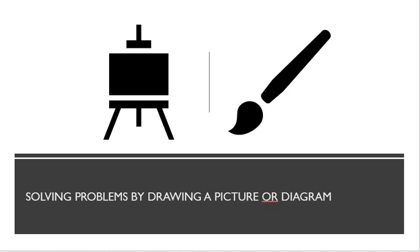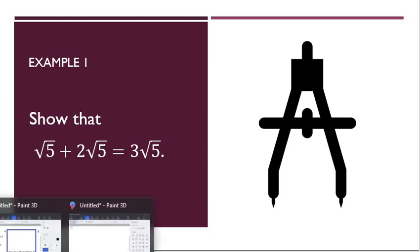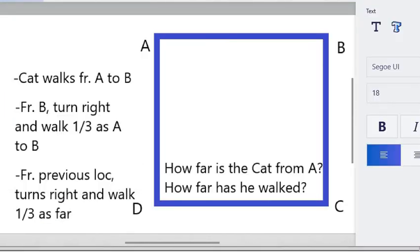Sometimes, difficult problems can be easily solved by drawing a picture, making an illustration, or looking at a diagram. We first solve this problem: show that square root of 5 plus 2 square root of 5 is equal to 3 square root of 5. It is easy to imagine or draw or illustrate what 5, 2, 3, or any other positive integers look like. But what about square root of 5? The answer lies in a very important theorem called the Pythagorean theorem.